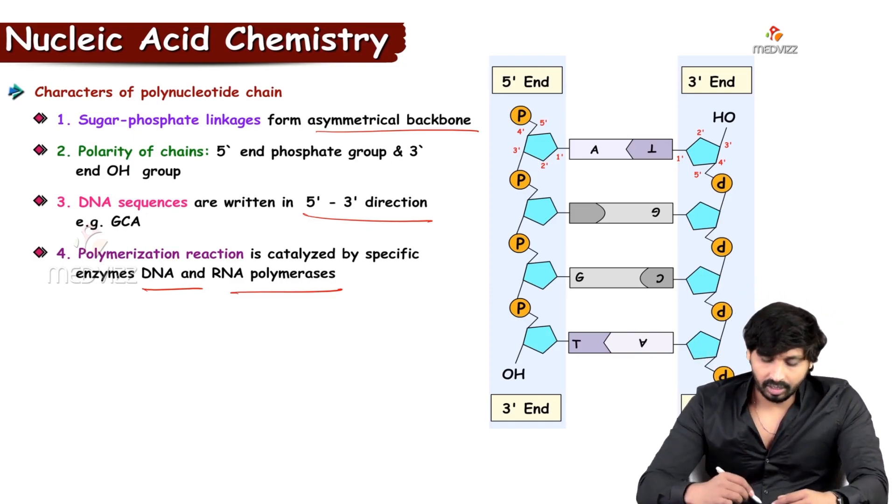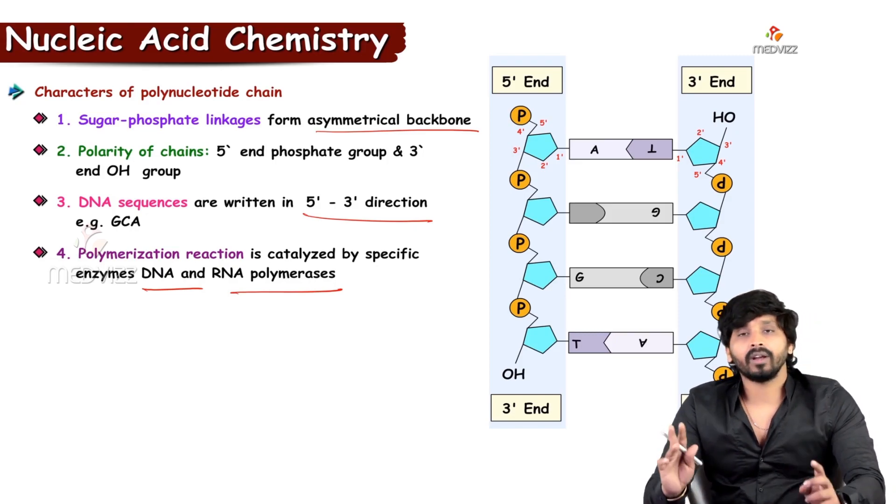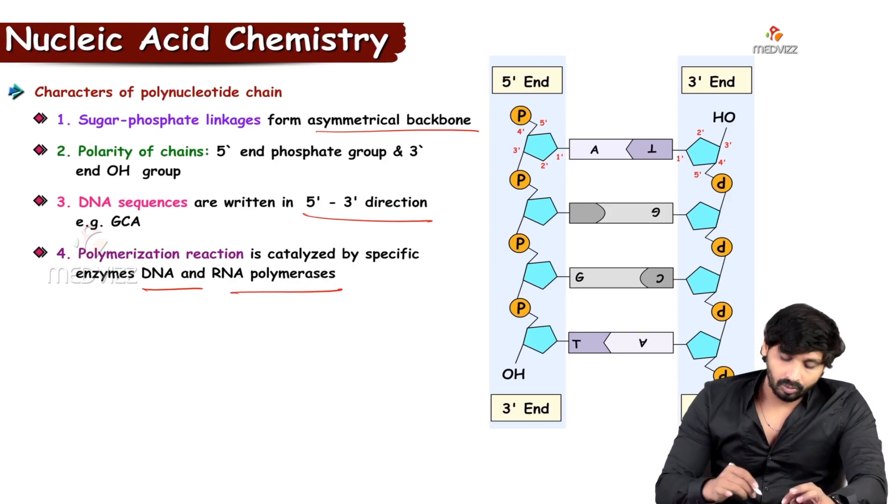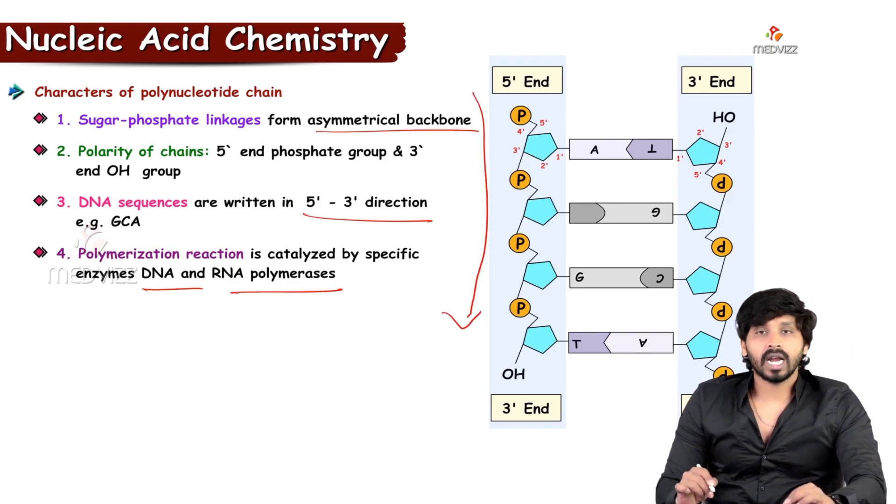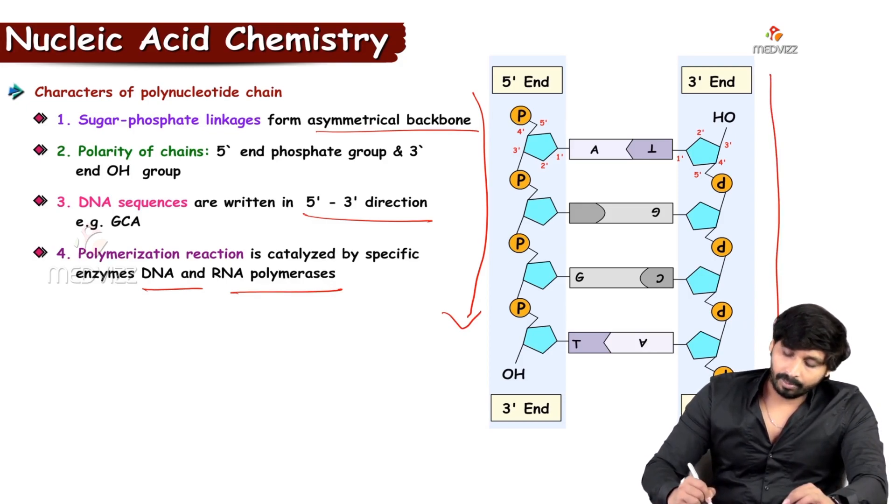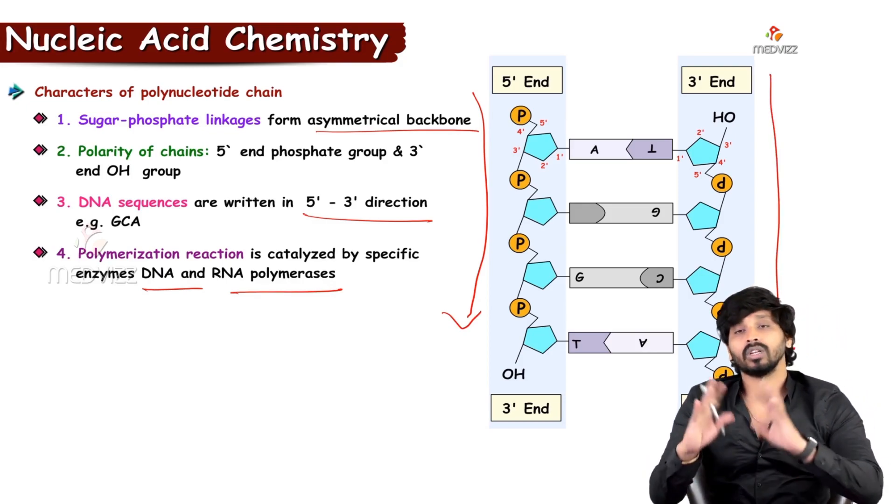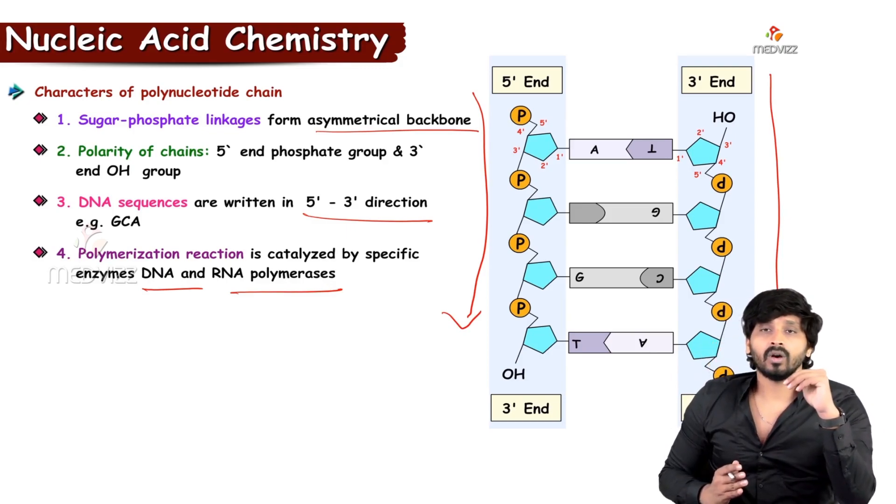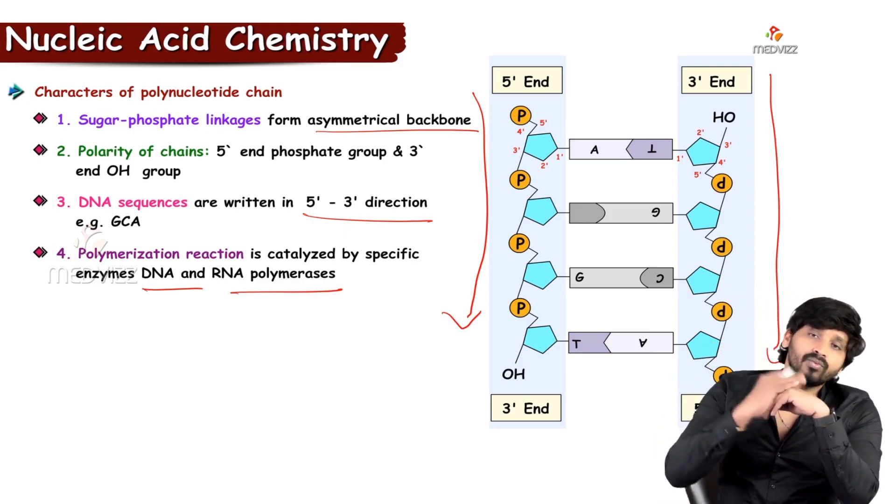You see here in the picture, 5' end and 3' end. Two strands, one strand running in 5' direction to 3' direction. The other strand is running 3' direction to 5' direction. So that means totally opposite. One strand is running in 5' to 3', other strand is running 3' to 5', opposite.